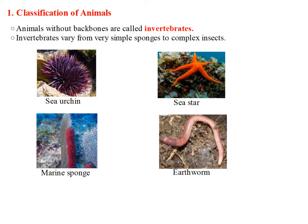Animals without backbones are called invertebrates. Invertebrates vary from very simple sponges to complex insects. Here we have four different pictures that show four different invertebrates: the sea urchin, the sea star, the marine sponge, and the earthworm. The simplest invertebrates are sponges. Earthworms are invertebrates that break down materials in soil.